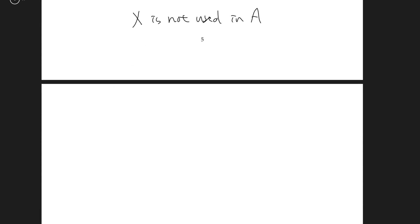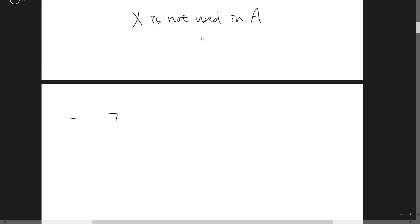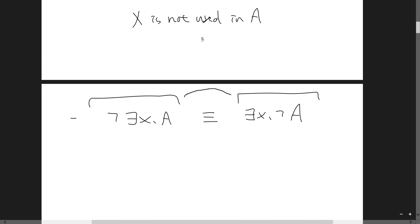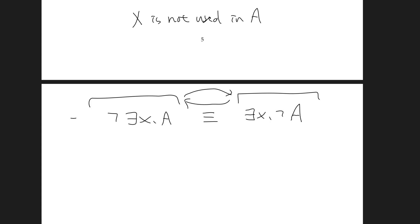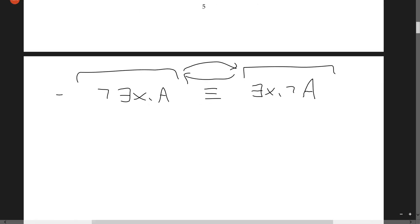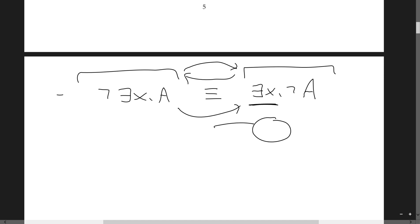In constructive logic, 'for all x, A' is not necessarily equivalent to A even if x is not used in A, because 'for all x, A' carries the important implication that the set of terms is not empty. Without it, you don't know whether the set of terms is empty or not. The course notes have another example: the equivalence between 'not exists x, A' and 'for all x, not A' — are these two propositions logically equivalent?